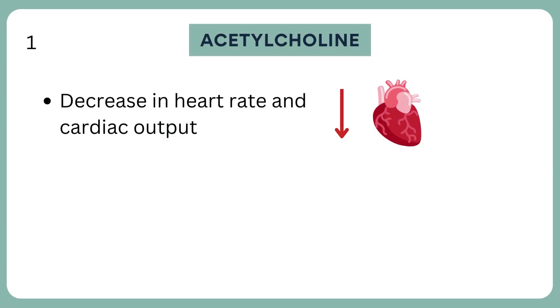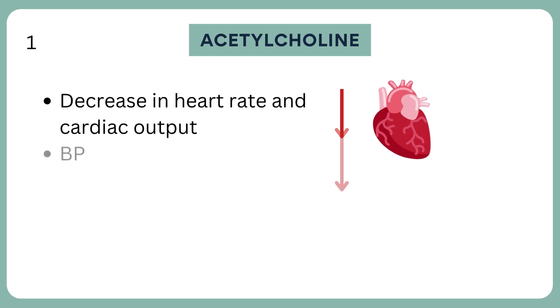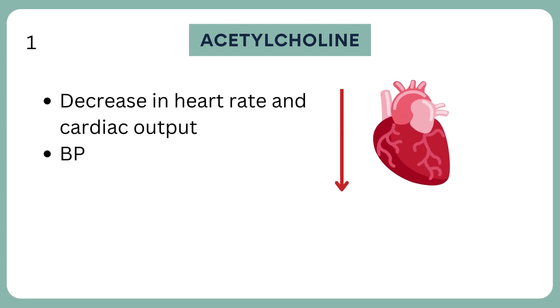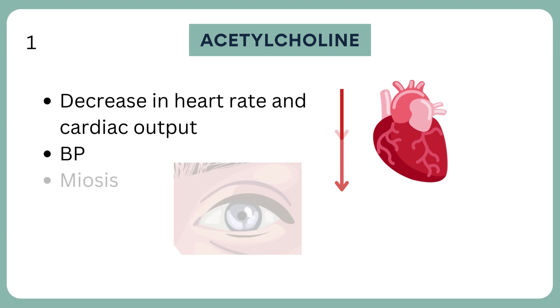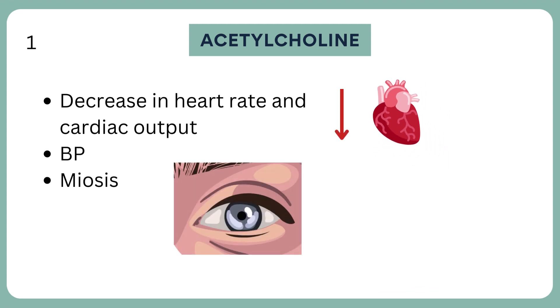Let's see the major pharmacological actions of acetylcholine. Acetylcholine decreases both heart rate and cardiac output. It also causes vasodilation and lowering of blood pressure. In the eye, acetylcholine constricts the pupillary sphincter muscle, causing miosis.